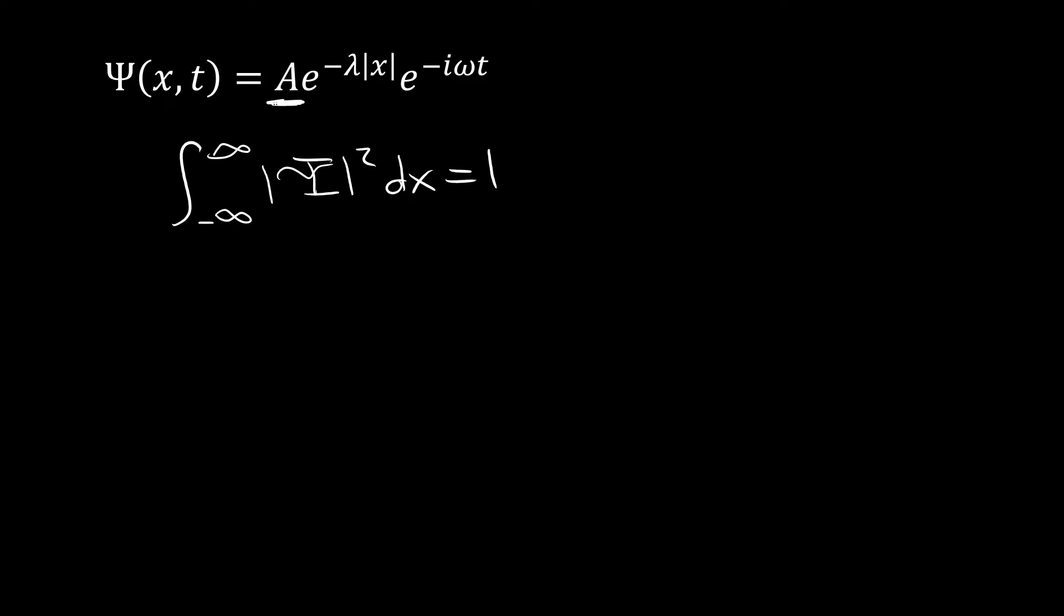Anytime we're normalizing something, that's generally speaking what we're doing. A is a constant and lambda is a constant. And so what we're going to do here, actually, is we're going to plug in 0 into our wave function here. That's going to completely do away with this complex exponential here, and we're just going to be left with A, e to the minus lambda absolute value of x.